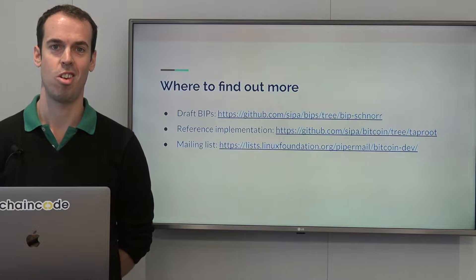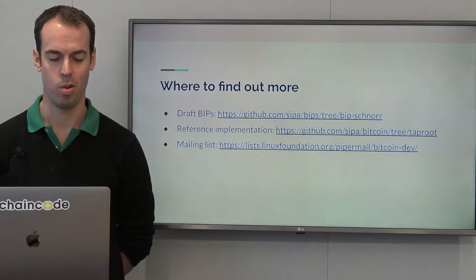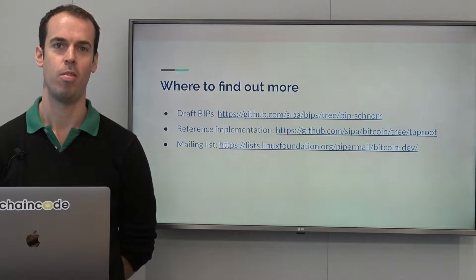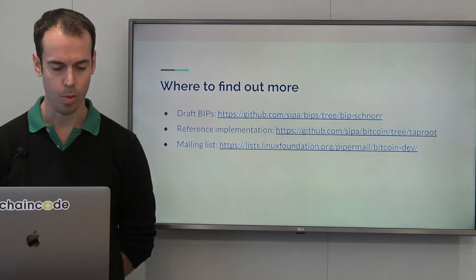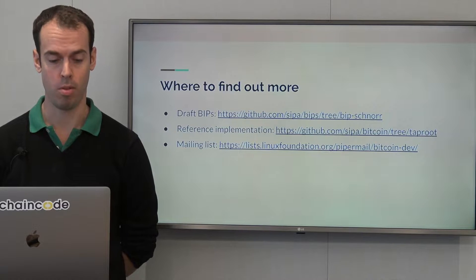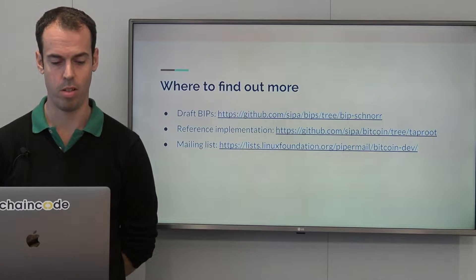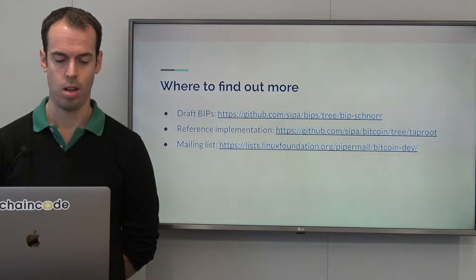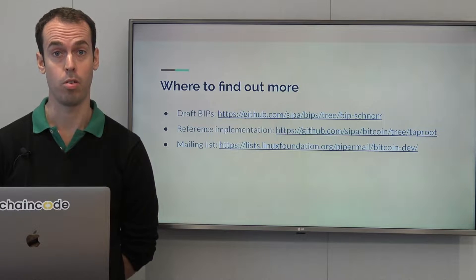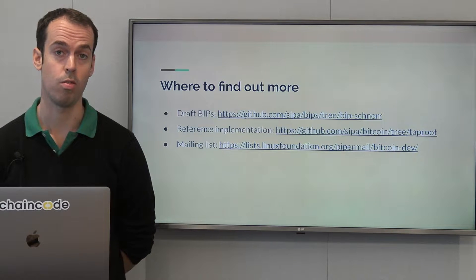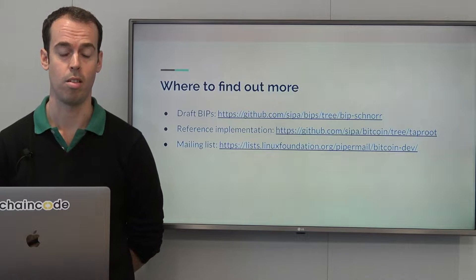I hope that you found these notebooks interesting and you've enjoyed the workshop. But where do you go next? Where do you find out more? The first place to look is at the draft BIPs. Those are in SIPA's BIPs repository, and you can find them under BIP Schnorr. Those are changing — they've changed recently in the last few weeks — so look there for the latest version.